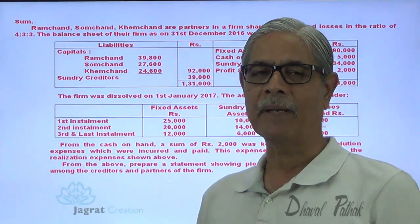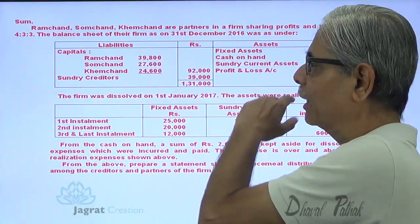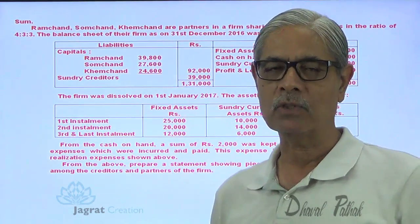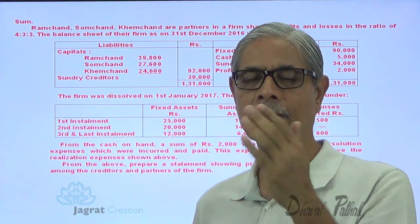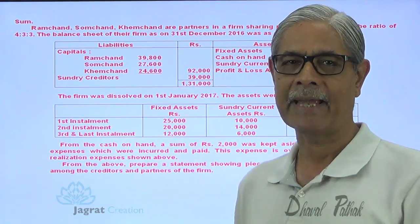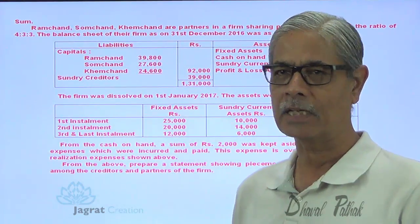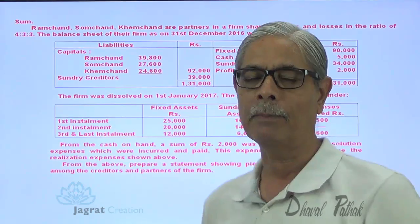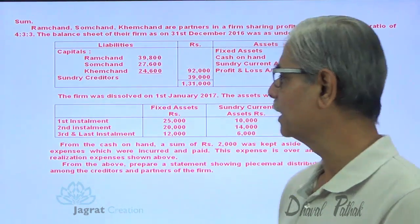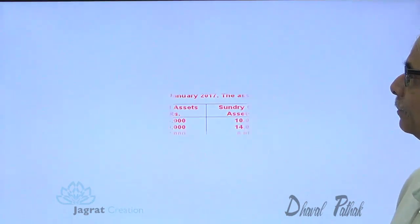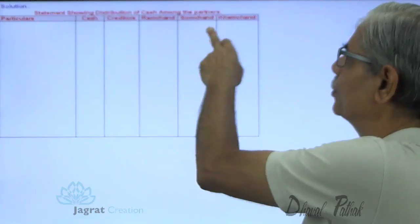For preparing the piecemeal distribution statement, I need to prepare columns. First, I am required to pay outside creditors, so one column will be maintained for creditors. One column will be a cash column from which payments are going to be made. Over and above that, I need three columns for the capital accounts of the partners — cash column, creditors column, Ramchand, Somchand and Khemchand.